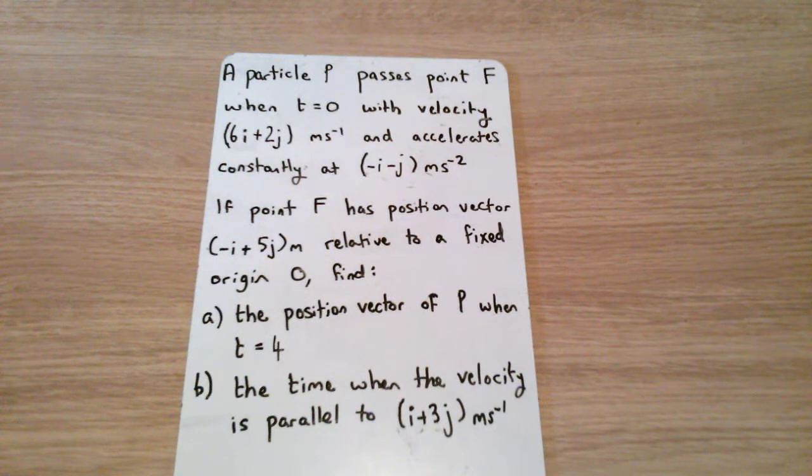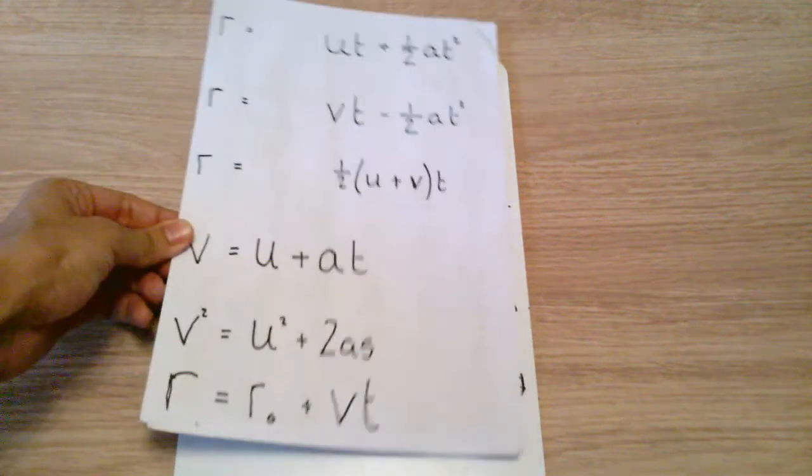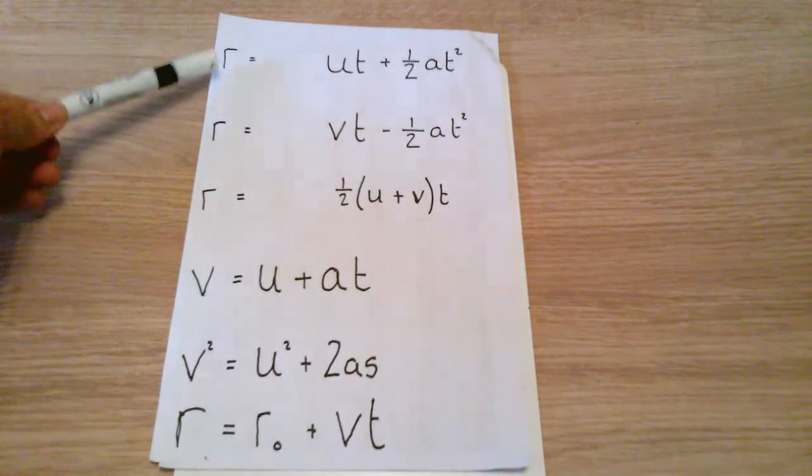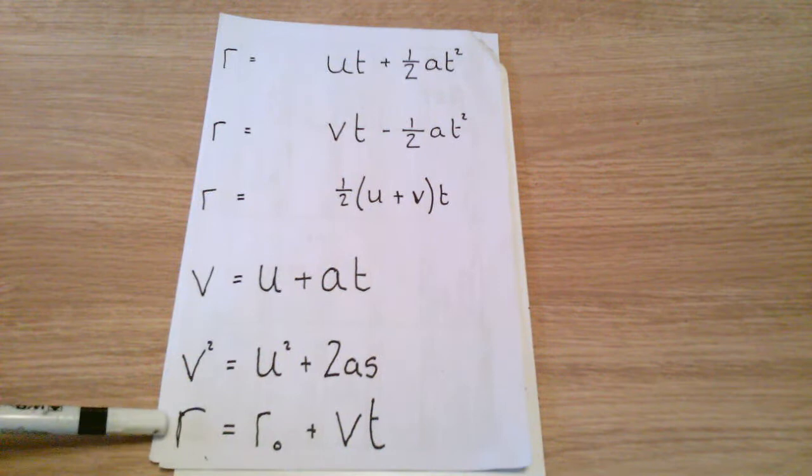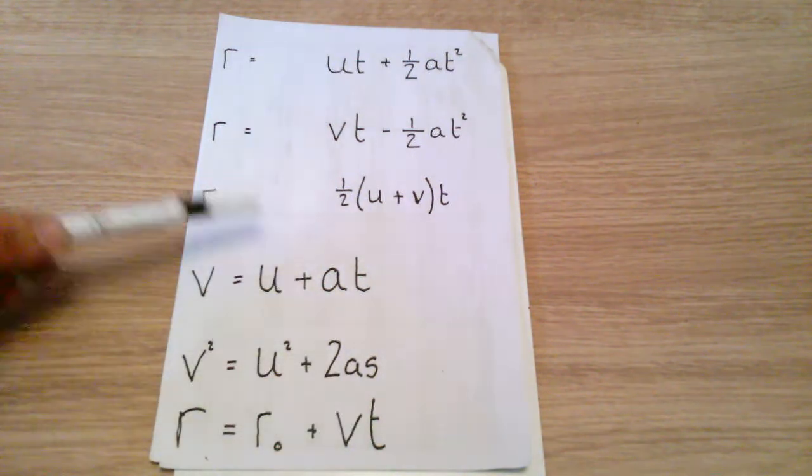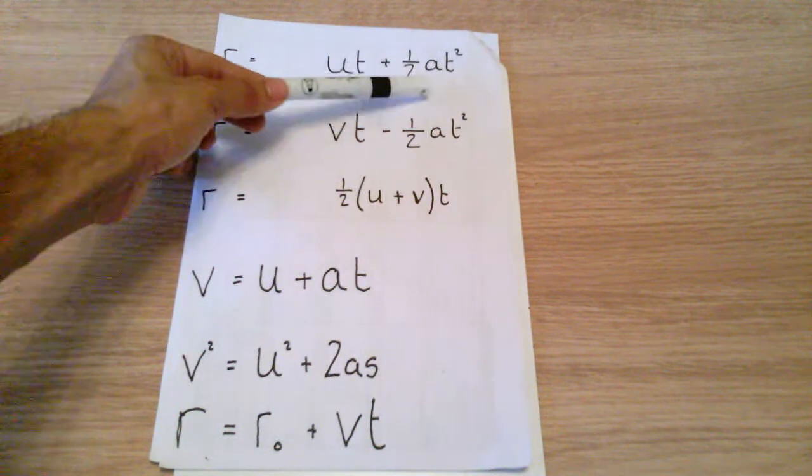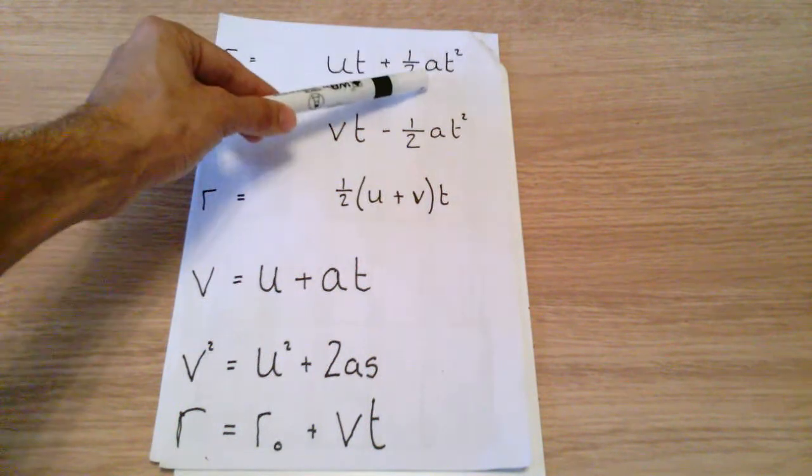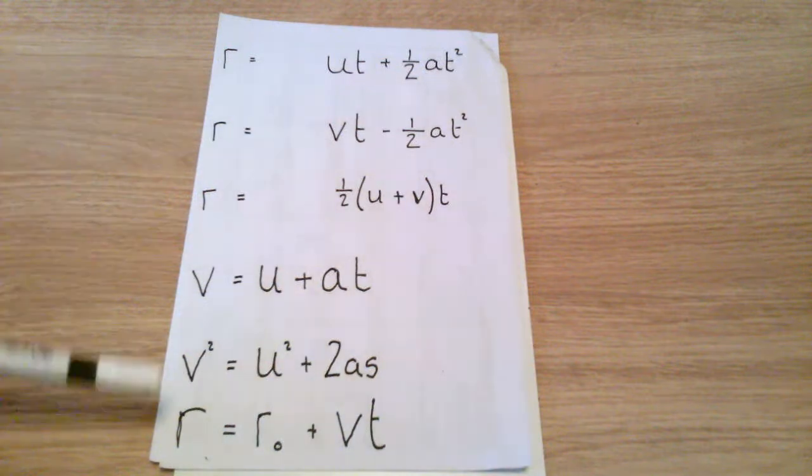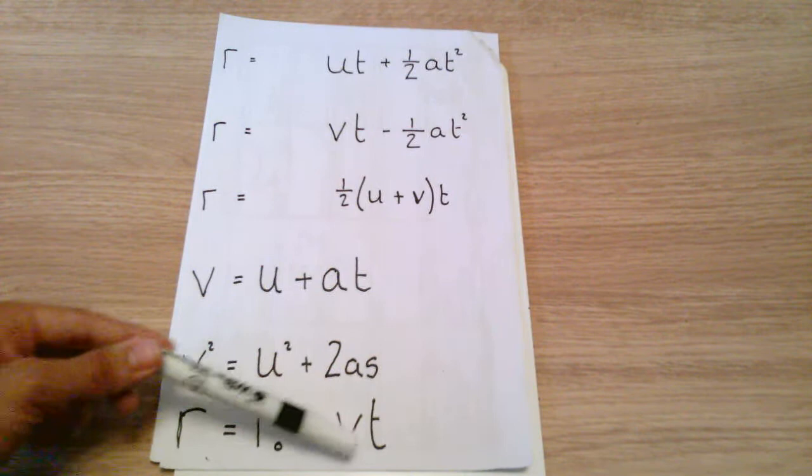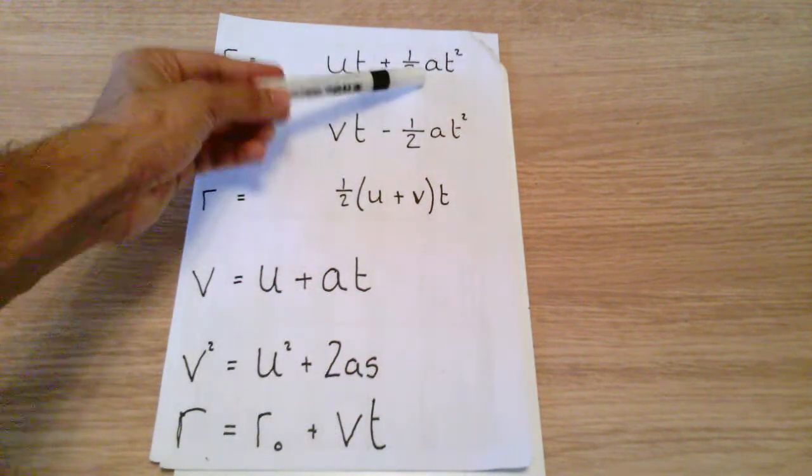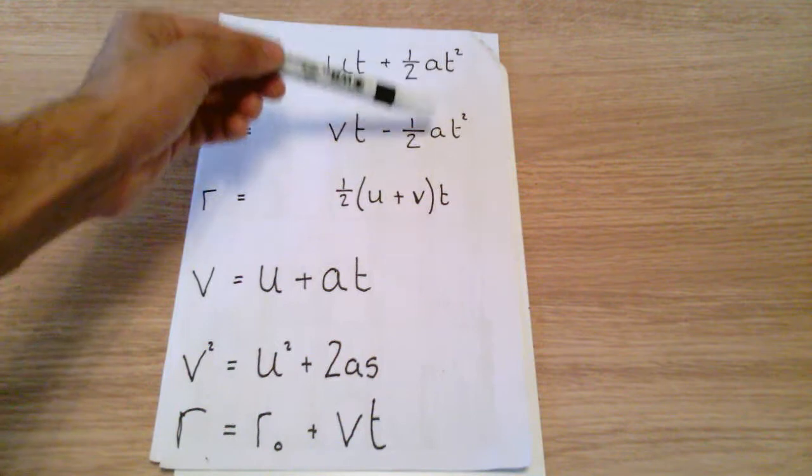Now some of you may have been looking in your textbooks and you may have come across your key formulas. There are two key formulas in the textbook generally: r equals ut plus a half at squared and r equals r naught plus vt. When we look at this, r equals ut plus a half at squared refers to a constant acceleration and an initial velocity, and r equals r naught plus vt refers to constant velocity, so the acceleration is equal to zero.